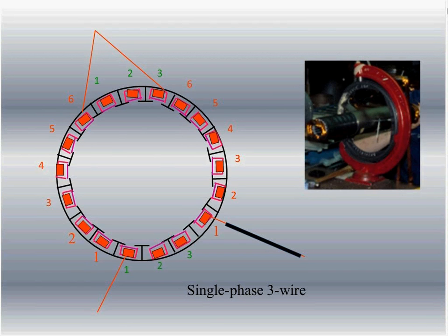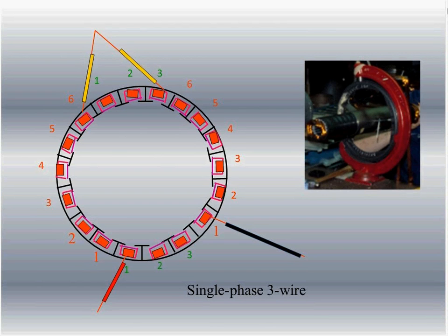Now, the split phase motor. There are three different types: you've got a three-wire motor, this is the split phase — the split phase is a two-wire motor. Split phase means we're going to turn on the electric, it's going to come down number one, and part of it's going to go through the main while part of it goes through a switch into the starting coils. After three-tenths of a second, that switch is going to open up and those starting coils are going to disengage — now all you're going to have is the running coils.